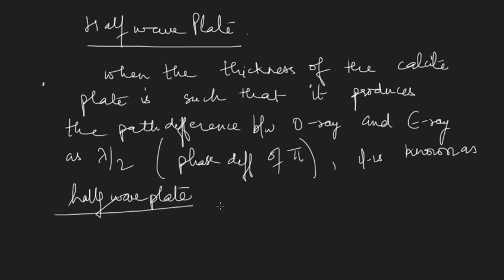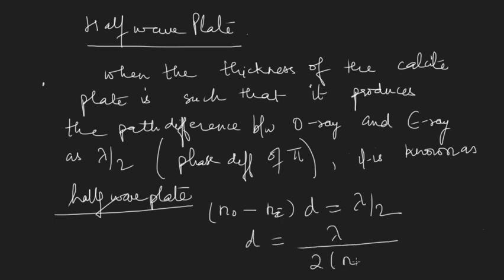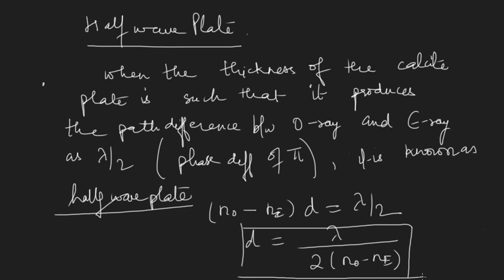The path difference is (N₀ - Ne)×d. When this equals lambda by 2, so the thickness of the plate is lambda divided by 2(N₀ - Ne), it is known as a half wave plate with a phase difference of pi. The half wave plate has many applications; it is used in the Laurent's half-shade device to clearly note positions in an optical polarimeter, allowing us to find the specific rotation of liquids. So we can use the phenomenon of interference of light to fabricate very important devices known as the quarter wave plate and half wave plate.